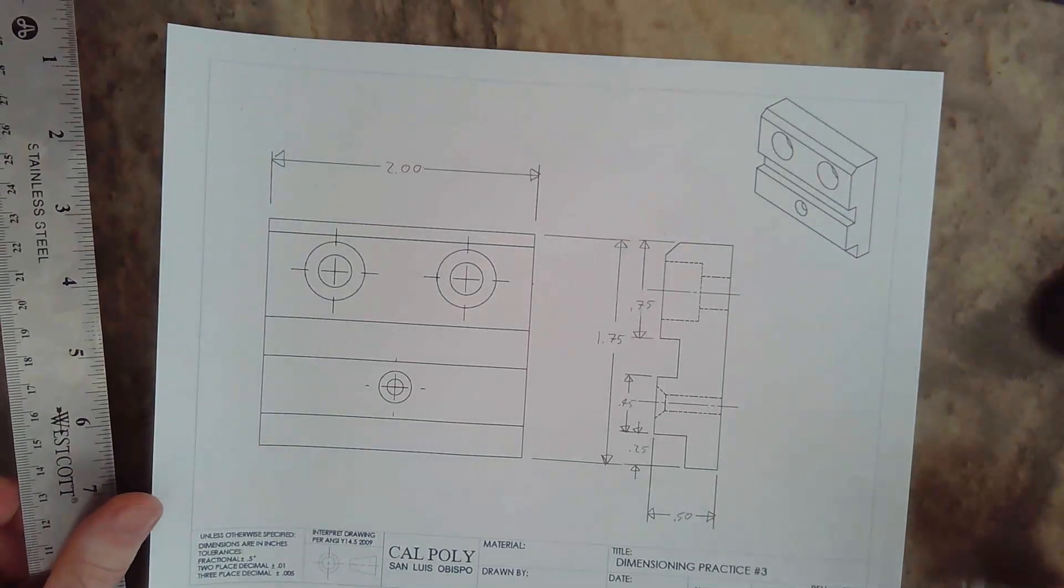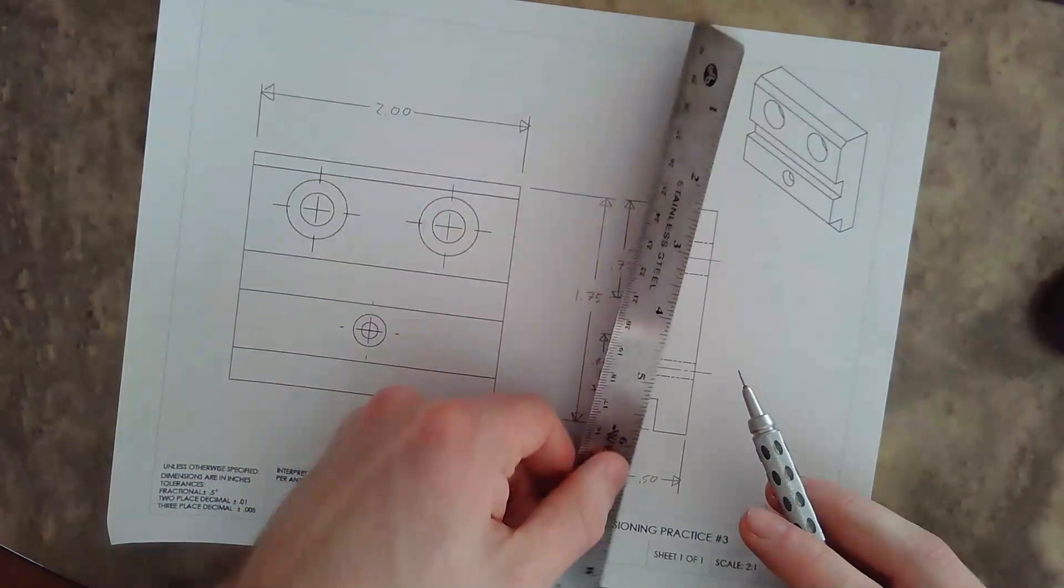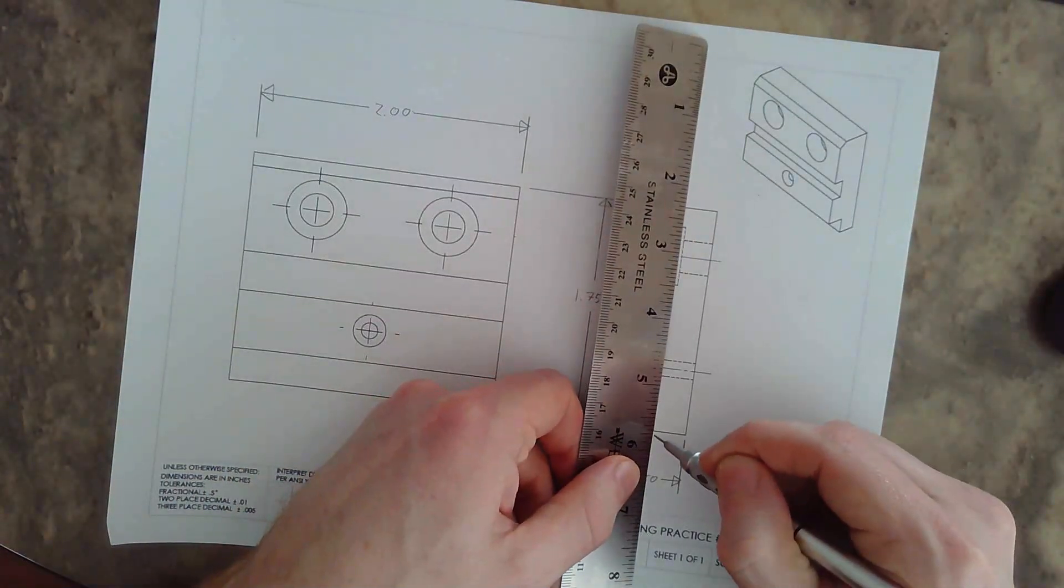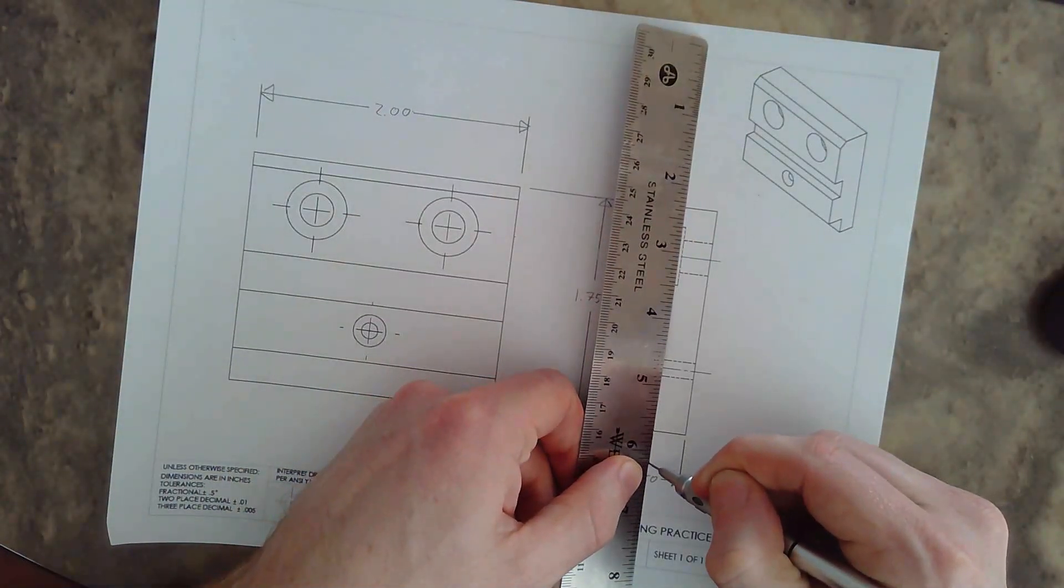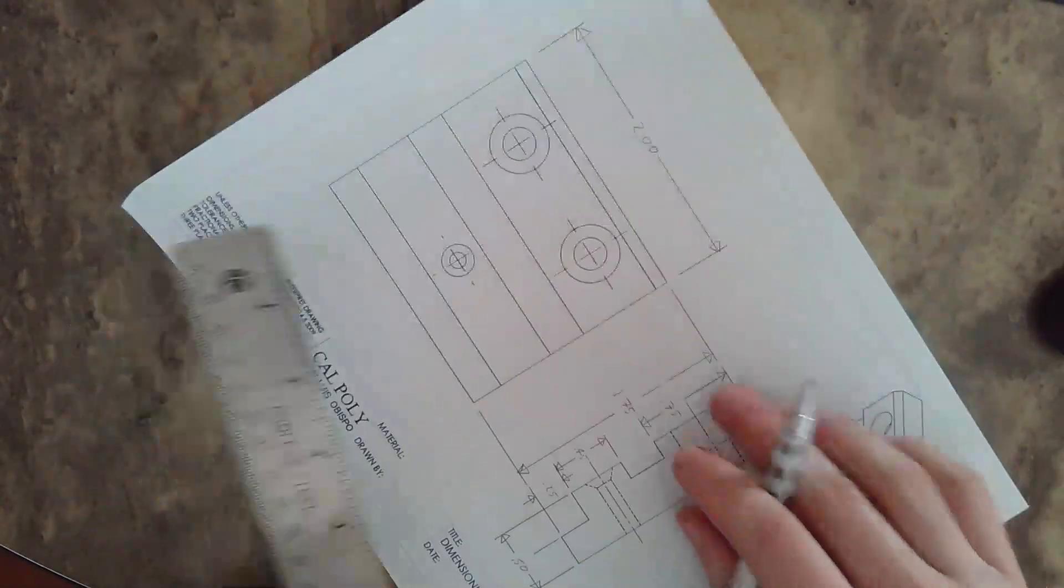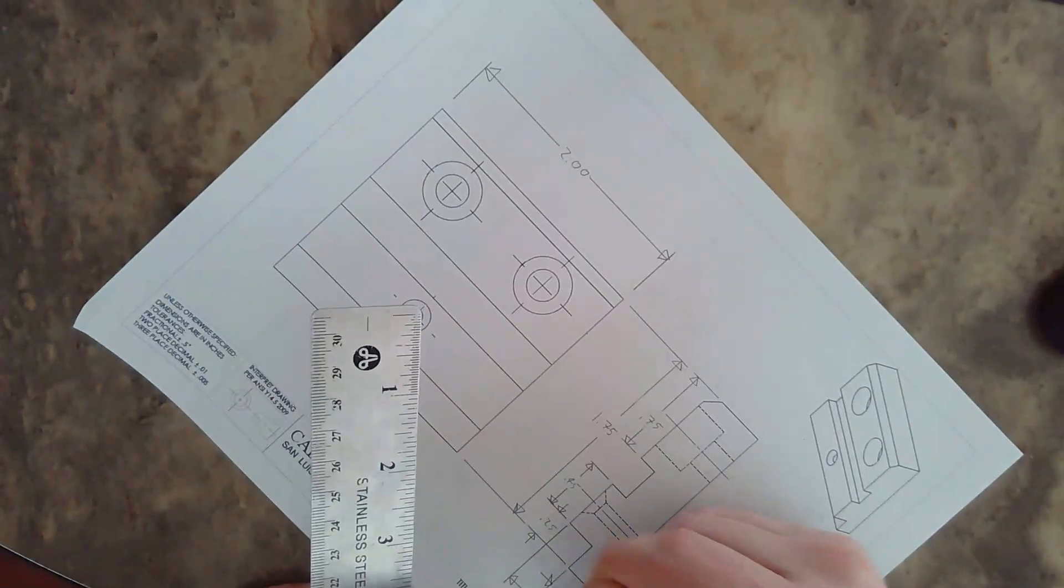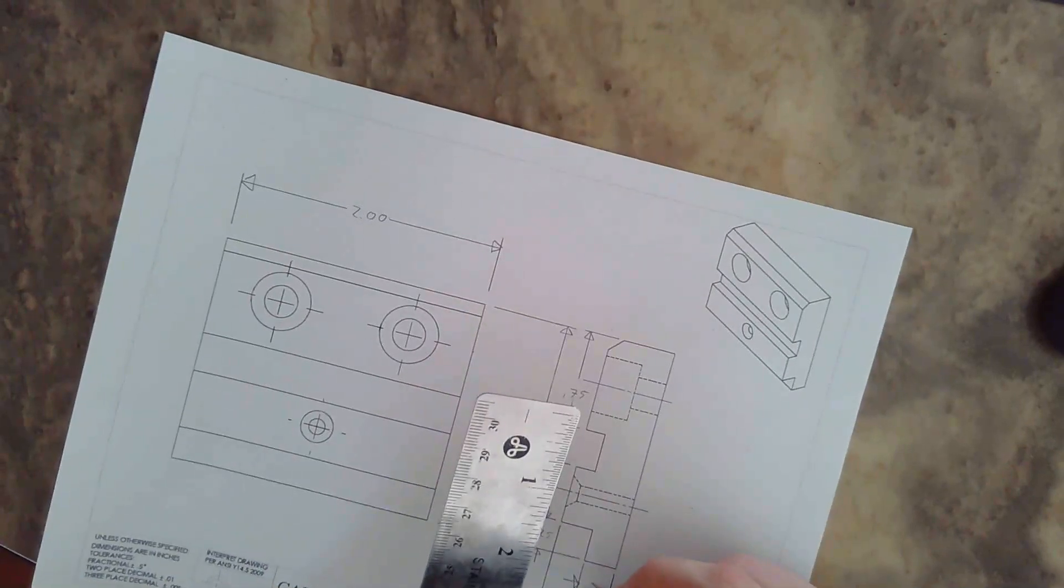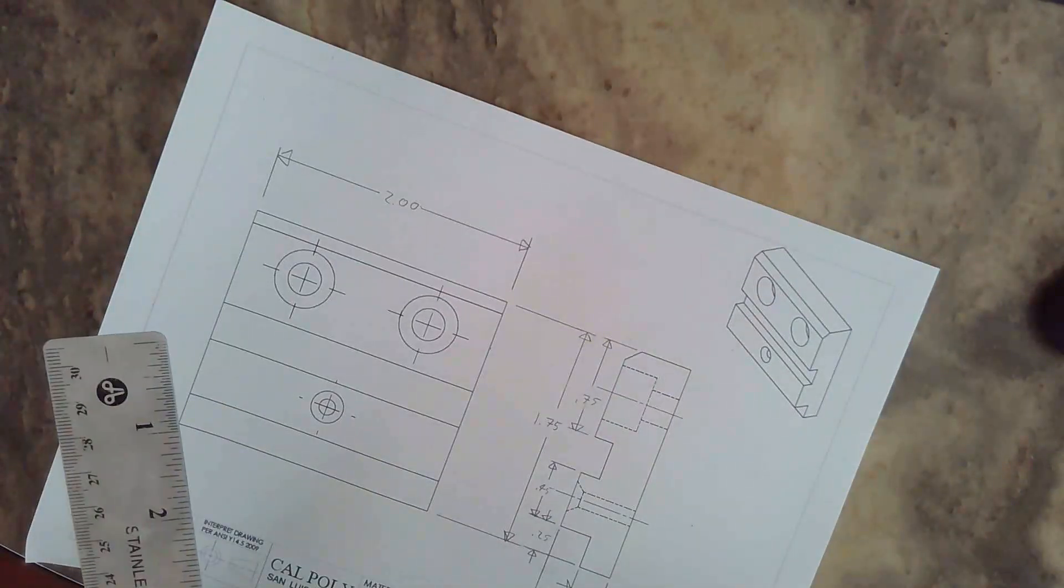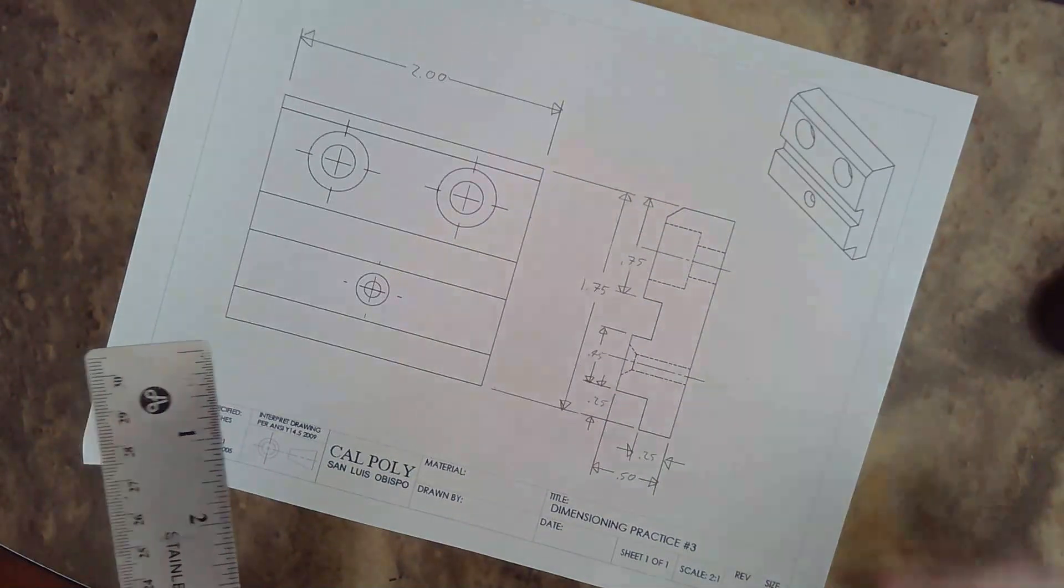We cannot dimension hidden lines, so we're ignoring these hidden lines right now. We'll deal with those later. I'm going to place this dimension down here. Because it is tight, I'm going to place the dimension lines on the outside and point towards the dimension, which is 0.25.